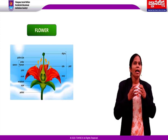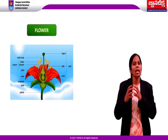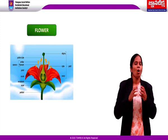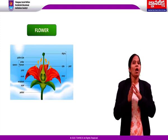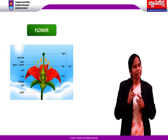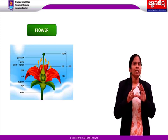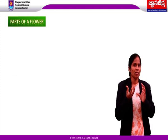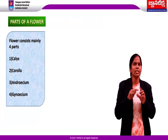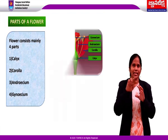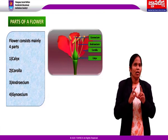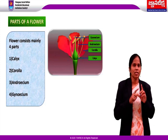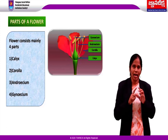Flower buds arise from the axial and apical parts of the stem. In a flower, the long stalk-like structure is called the pedicel. The parts of a flower are arranged on the thalamus — the base part. The flower consists of four whorls arranged on the thalamus: first, calyx; second, corolla; third, androecium; and fourth, gynoecium.